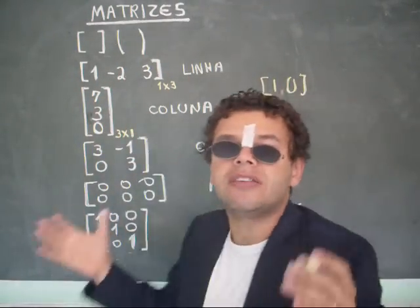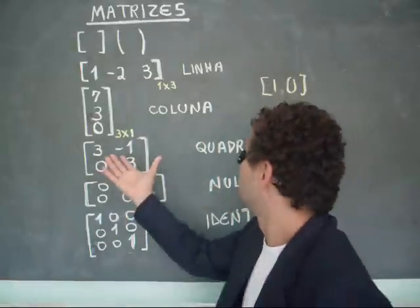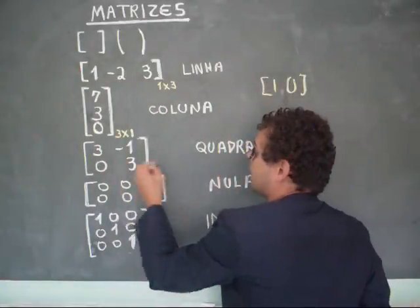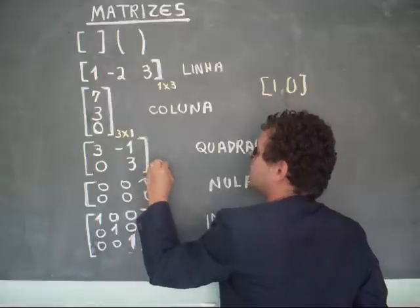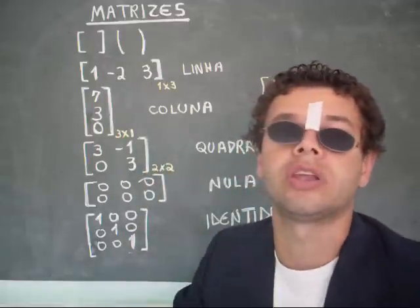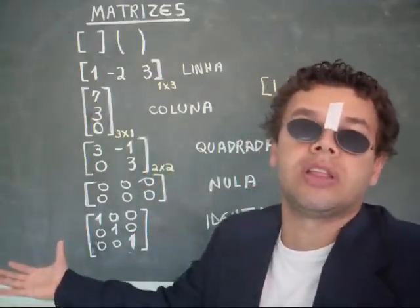Matriz quadrada. O que seria uma matriz quadrada? Uma matriz que tem, nesse caso, ordem dois, que seria o quê? Duas linhas por duas colunas. Poderia ser três linhas por três colunas, que seria ordem três.